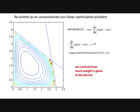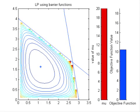We use the value of mu to control how much weight is given to the barrier. A large value of mu means we stay as far away as possible from the boundaries. Solving this NLP with a large value of mu gives us the analytic center of the feasible region, shown here as a star.